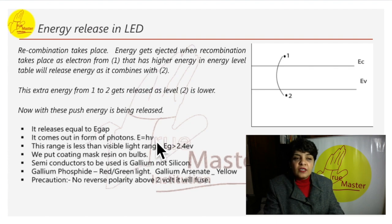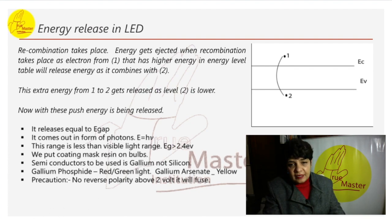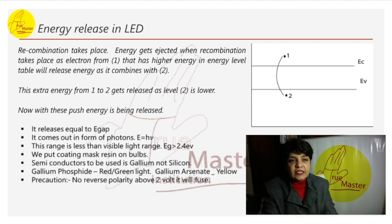Semiconductor to be used is gallium. If we want different light bulbs, say we do not want only the yellow, light bulb like yellow, we will use gallium arsenate. And if we want some other color, we are going to use some other material like gallium phosphate. Phosphate will give you red and green light. Gallium arsenate will give you yellow light.